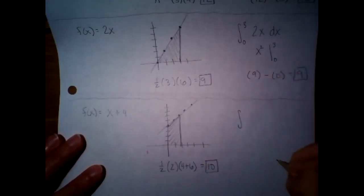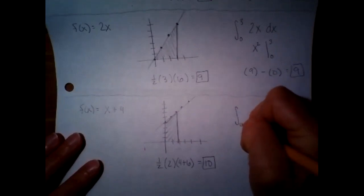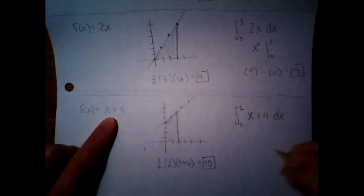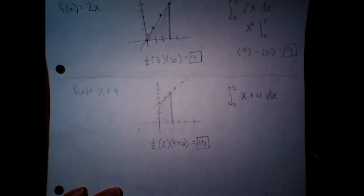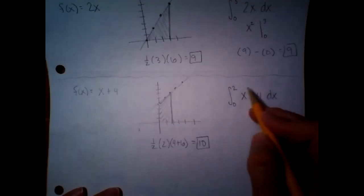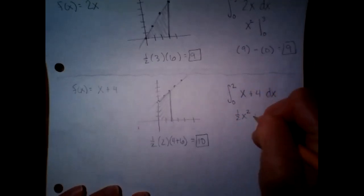Now, if we do this using calculus, what are our boundaries? Good. Zero to two. This is our function. What is the anti-derivative of this? Hey, guys. Anti-derivative of x plus four. There it is. One half x squared plus four x.